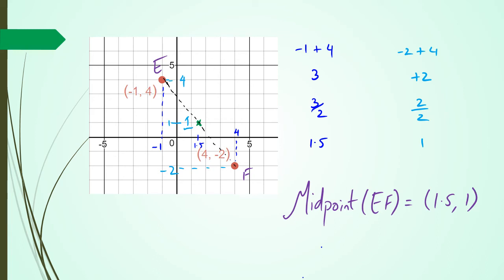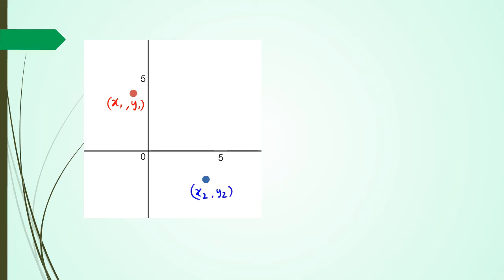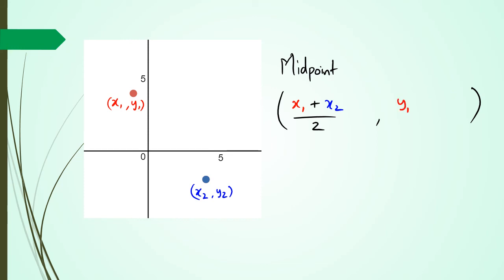To generalize: I wanted to show you how these things work before giving you the formula. I've got a red point which I'll call (x1, y1) and a blue point which is (x2, y2). To find the midpoint, the x component is x1 plus x2 divided by two, and the y component is y1 plus y2 divided by two. That's the midpoint formula.